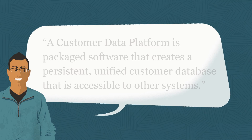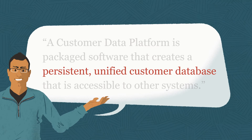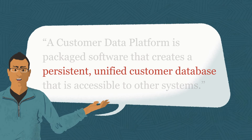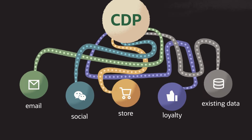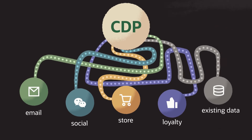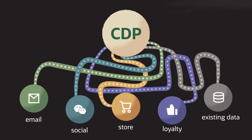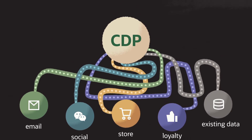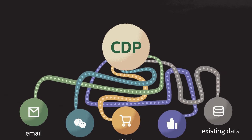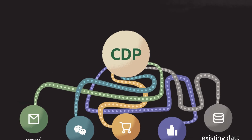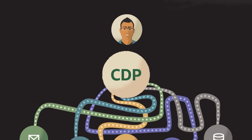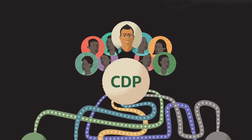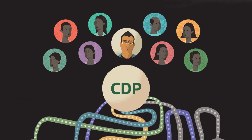The second key element is the unified persistent customer database, which means that a CDP takes data from all sources, unifies it, and stores it for as long as you want, creating a complete customer profile for each of your customers.